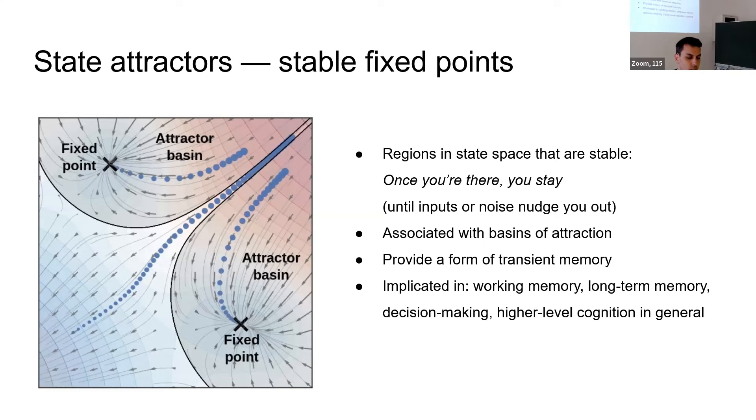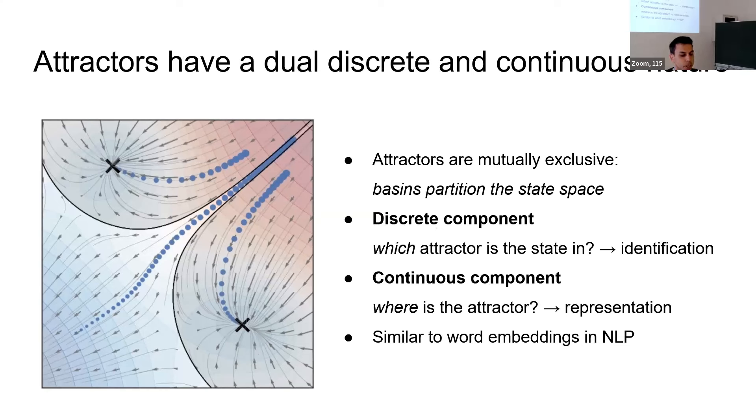It's been used to model decision-making and just very relevant for higher level cognition. But a less noticed feature about attractors is that they have this dual, discrete, and continuous nature. What I mean by that is the attractors are mutually exclusive. These basins partition the state space into a finite number. So the discrete component is simply, well, which attractor are you in? Are you in this one? Are you in that one? But the continuous component is actually where is the attractor in the state space? That's like this high-dimensional vector. It's not a discrete thing. If you know something about natural language processing in machine learning, this is very similar to the idea of word embeddings, where the word ID is the discrete component, and then the actual embedding is this continuous meaning part of it.